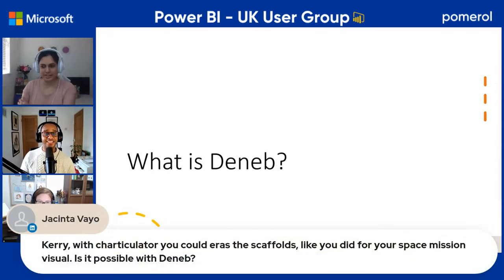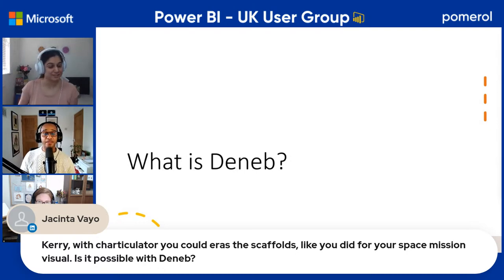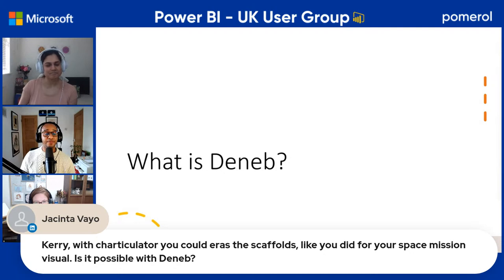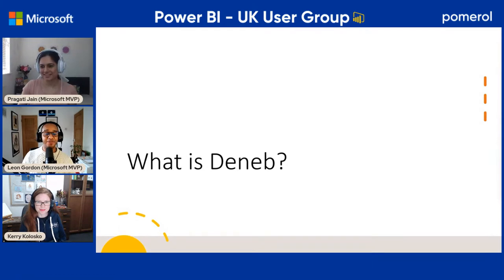The first question from Jacinta is: with Charticulator you could erase the scaffolds like you did for your space mission visual — is it possible with Deneb? The custom axes — I don't believe so; it would be a lot of brain power to do custom axes in Deneb. But you can use polar plots — it takes a little bit more effort than it would in Charticulator, but polar plots are certainly possible in Vega-Lite and Vega.